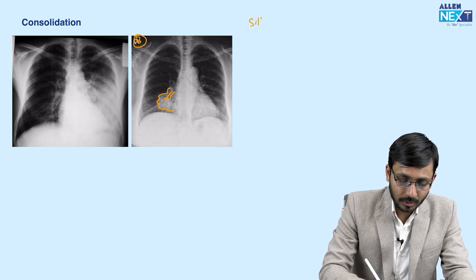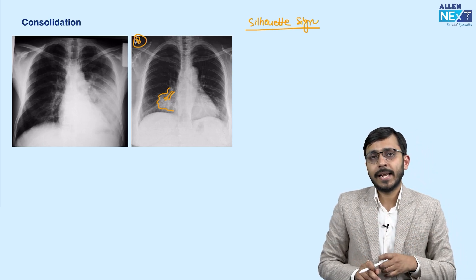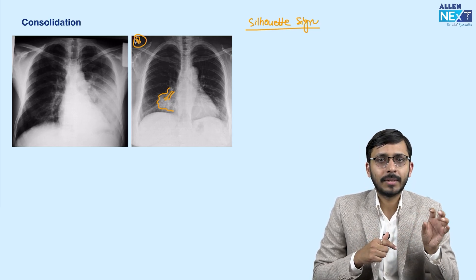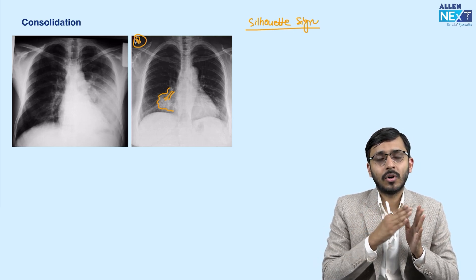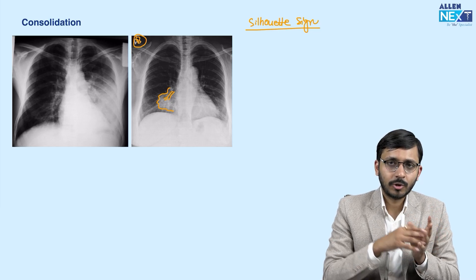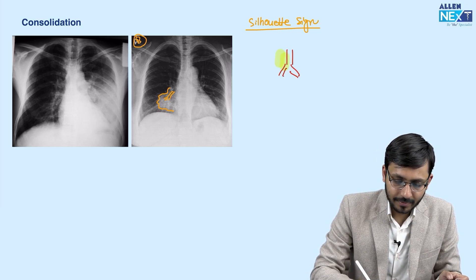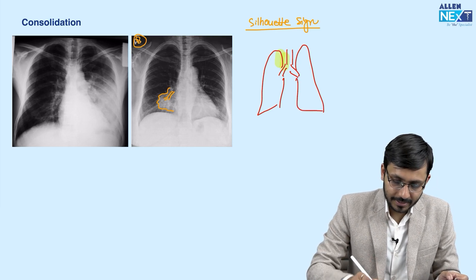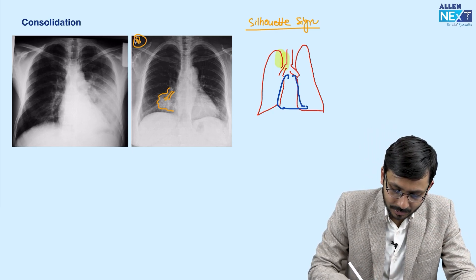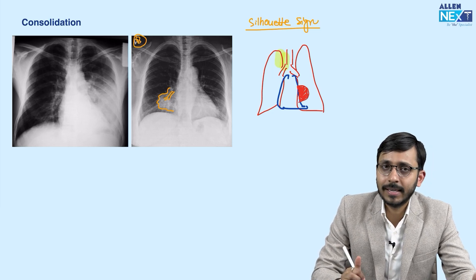At this point, I would like to tell you about the silhouette sign — a very important sign in radiology given by Dr. Felsen. What it essentially tells you is that if any lung pathology is in anatomical contact with a mediastinal structure and is of the same density as that mediastinal structure, it will obscure its border. For example, with the trachea, right and left lung, and heart — any pathology in direct anatomical contact with the mediastinum will cause that border to be obscured.